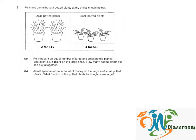Large plants are sold at 2 for $15, and small potted plants are sold in groups of 3. So in order to buy the same number of plants, we need to find the lowest common multiple of 2 and 3, which equals 6. That means Pei must have bought in groups of 6 plants: 6 large and 6 small.